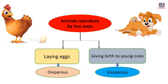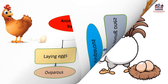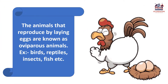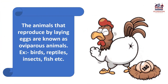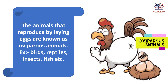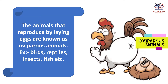Animals reproduce by two ways: by laying eggs and by giving birth to young ones. The animals that reproduce by laying eggs are known as oviparous animals. For example, birds, reptiles, insects, fish, etc.